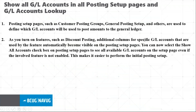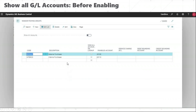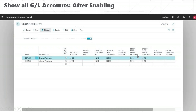One more cool feature is GL accounts, where we can see all the GL accounts in the posting setups. Earlier this feature wasn't available; to see the GL accounts, you had to manually go through the table and make them visible, or write an extension to populate them on the page. Now there is a 'Show All Accounts' button on every posting group setup page. By default it's set to off, but once set to on, you can see all the posting setup GL accounts — including discounts, application entries, and so on.